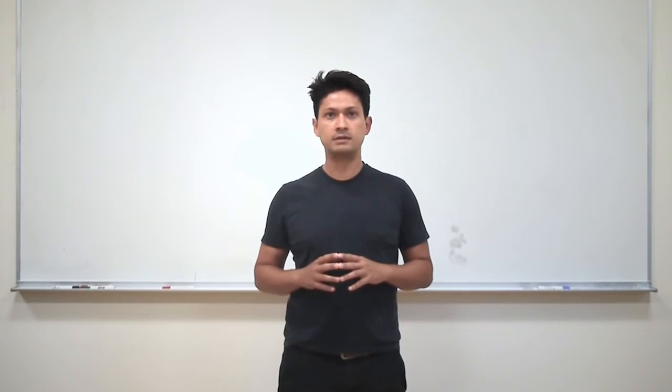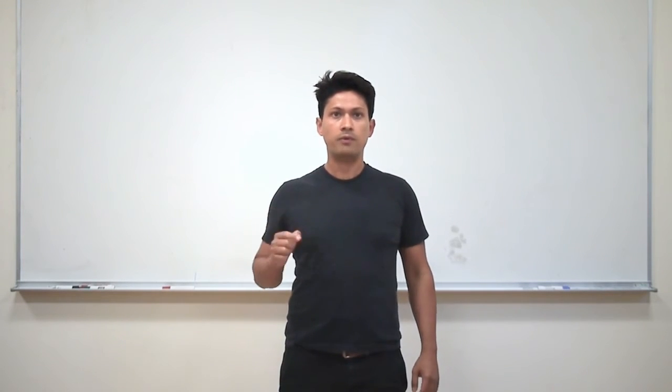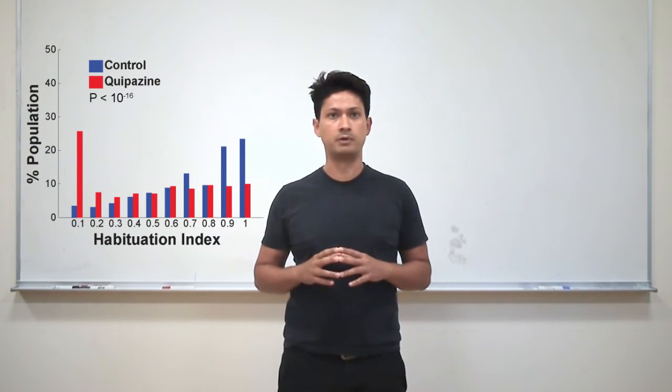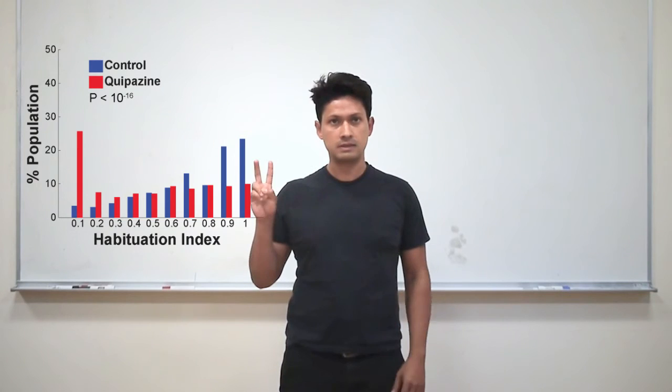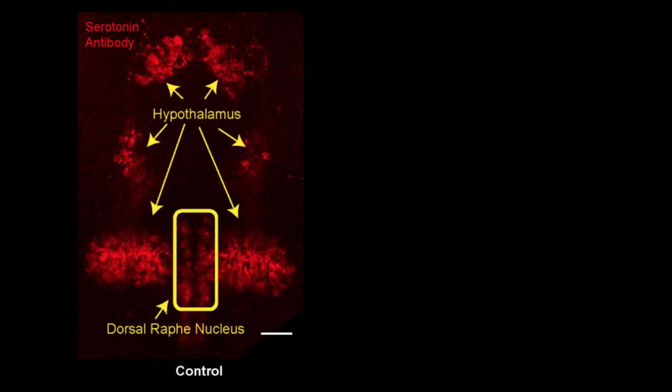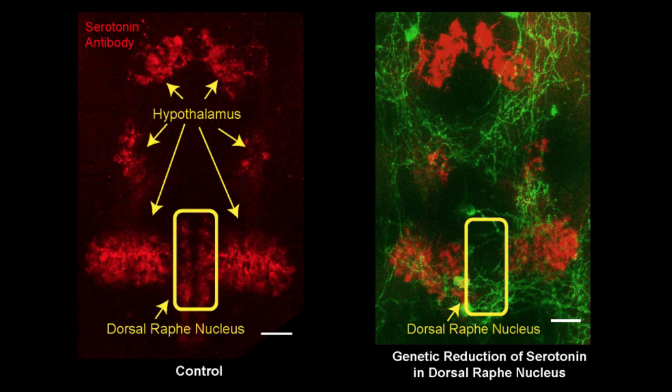We tested our model in four ways. First, we found that treatment with a serotonin agonist increases the frequency of low habituation individuals in a population. Second, genetically induced decrease in the serotonin content of dorsal raphe neurons increases habituation.